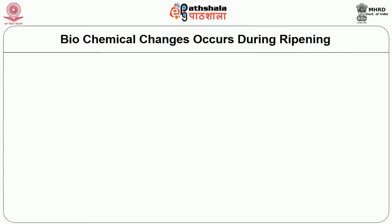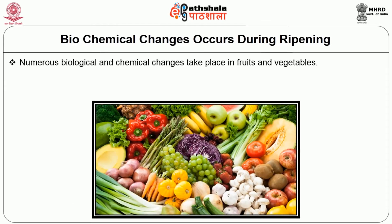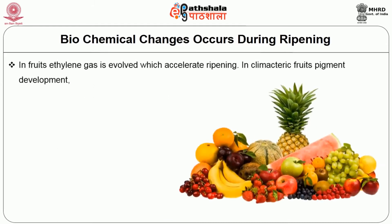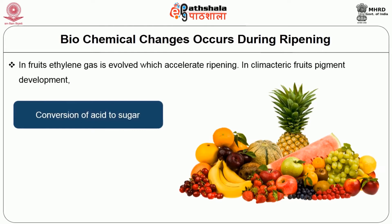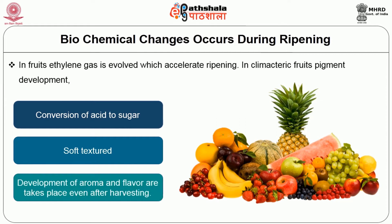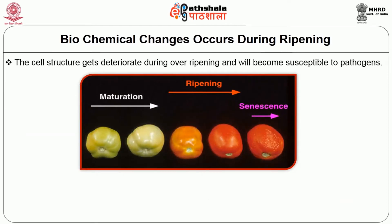Now let us look into the biochemical changes that occur during ripening. Numerous biochemical and chemical changes take place in fruits and vegetables. Plant cells use oxygen and release carbon dioxide during respiration, driving metabolic activities. In fruits, ethylene gas is evolved which accelerates ripening. In climacteric fruits, pigment development, conversion of acid to sugar, soft texture, and development of aroma and flavor take place even after harvesting. The cell structure deteriorates during over-ripening, making the fruit susceptible to pathogens.